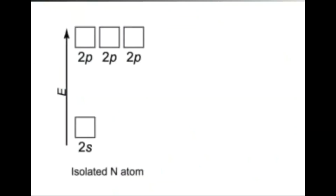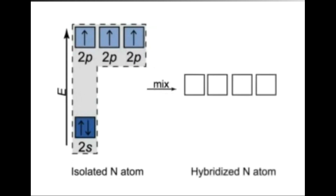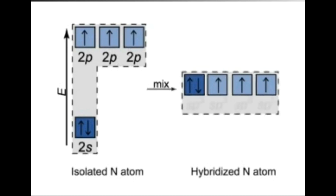For other shapes within a given electron group arrangement, the model proposes lone pairs in one or more of the hybrid orbitals. For example, the trigonal pyramidal shape of ammonia arises when the 2s and the three 2p orbitals of the central nitrogen mix and become 4 sp3 hybrid orbitals, one of which is filled with a lone pair.